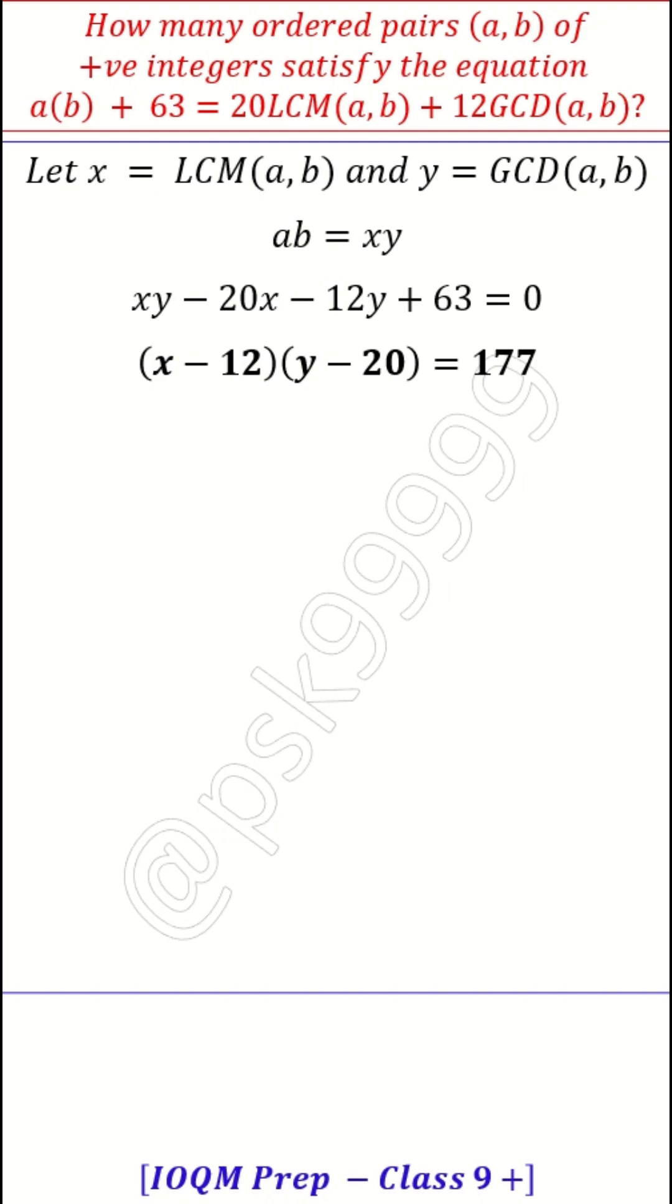Now, what are these two numbers? (x - 12) and (y - 20) are two integers. Product of these two integers is 177. So we should write 177 in terms of its factors and compare all the possibilities. So I can write 177 as 1 × 177 or 3 × 59.